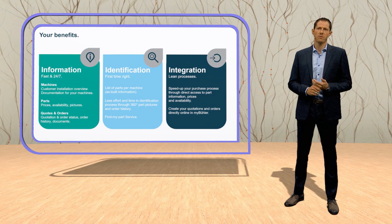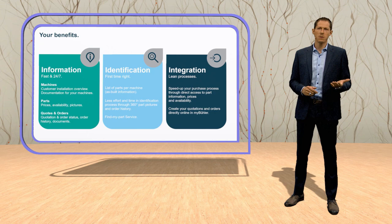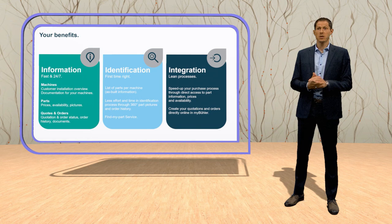Last but not least, integration. We are aware that all our customers have a purchasing process, so it was very crucial that we can integrate into that purchasing process. On the one hand, we offer a lot of features in myBühler where you can set up different authorization levels. On the other hand, we know that you have your purchasing process and we try to combine the two — we can also integrate into your purchasing systems.